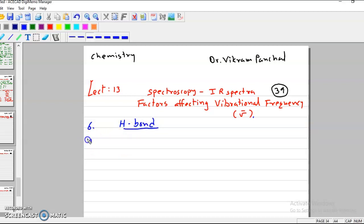There are two types of hydrogen bonds, so first of all we will take intermolecular hydrogen bonds.